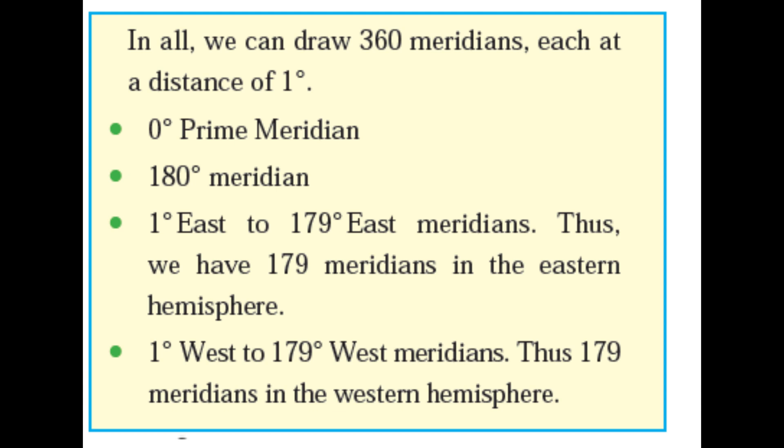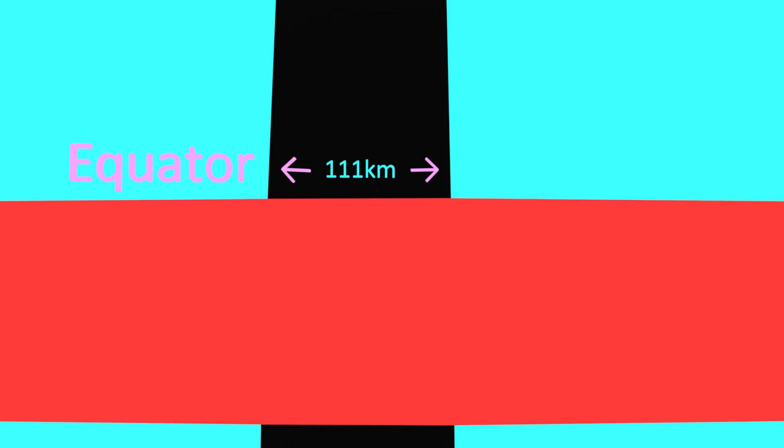In all, we can draw 360 meridians each at a distance of 1 degree. There is the 0 prime meridian at the center and the 180 degree meridian. 1 degree east to 179 degrees east meridian. Thus, we have 179 meridians in the eastern hemisphere. At the same time, 1 degree to 179 degrees west meridian is also there. Thus, we can count 179 meridians in the western hemisphere. We want to remember this: the distance between two consecutive meridians is different on different parallels. It is maximum at the equator. It is zero at both poles.